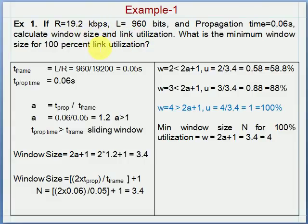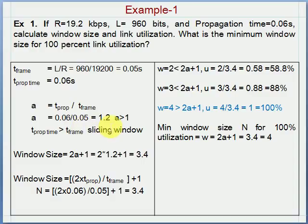Consider this example where bandwidth is 19.2 kbps, frame size is 960 bits, and propagation time is 0.6 seconds. We need to calculate window size and link utilization, and determine the minimum window size for 100% link utilization. We calculate T-frame time; T-prop is given, and we get the value of A as 1.2, which is greater than 1. Since propagation time is greater than T-frame time, it indicates the need for sliding window. We calculate the window size using 2A plus 1 and get 3.4.